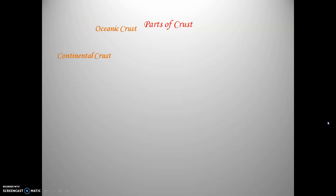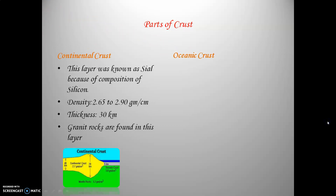We will now move on to the parts of the crust. There are two important parts of the crust: continental crust and oceanic crust. You can see here — the yellow colored portion is the continental crust, and below that is the mantle. Today, we will focus on the two types: continental and oceanic crust.